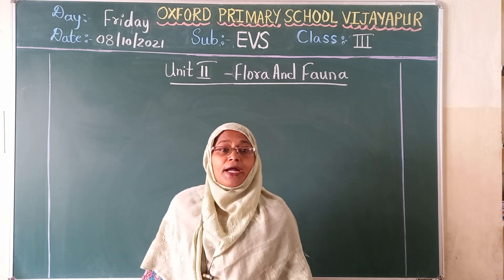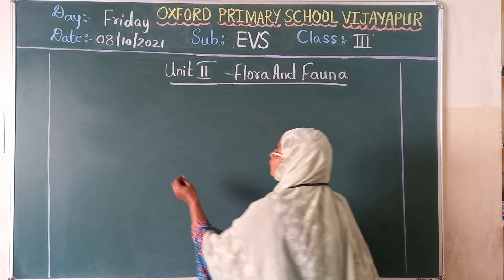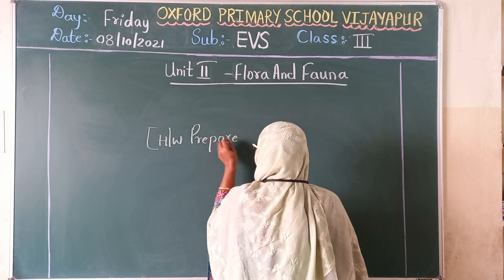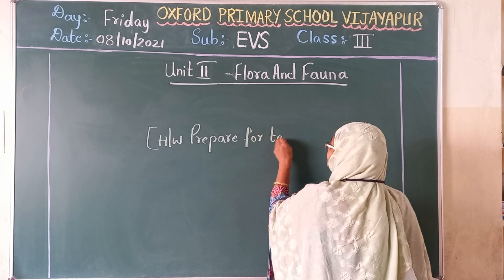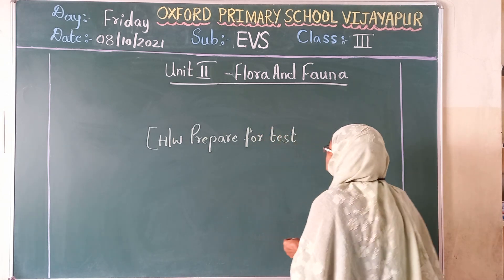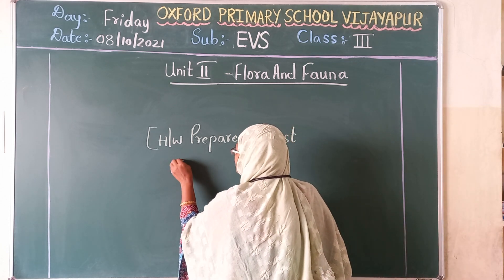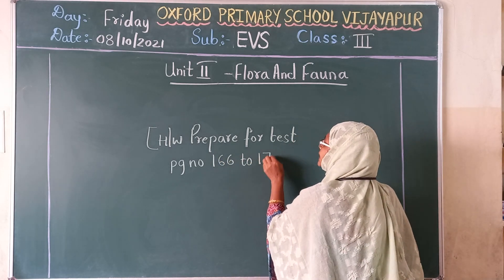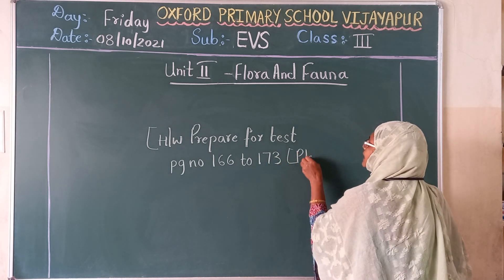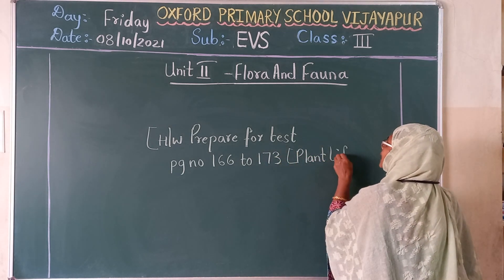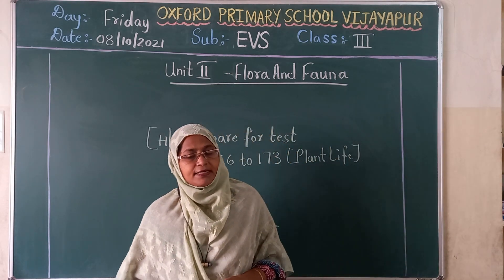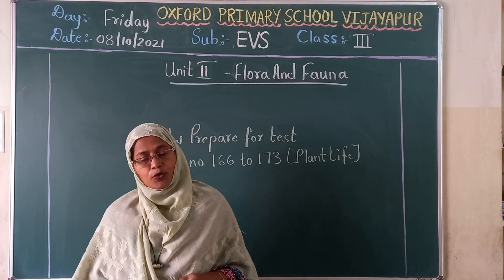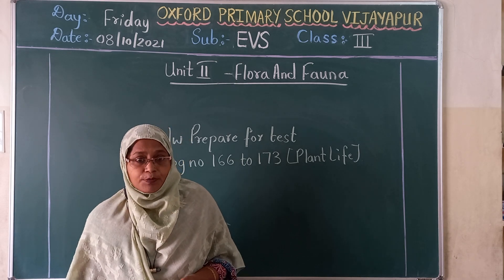So before we open the test book and do revision, your homework is to prepare yourself for the test. You are attending weekly tests. Prepare for the test — page number 166 to 173, all about plant life, the exercises on page 173, the question and answer and the word meanings. We will open the test book and revise it. Open your test book, page number 163.